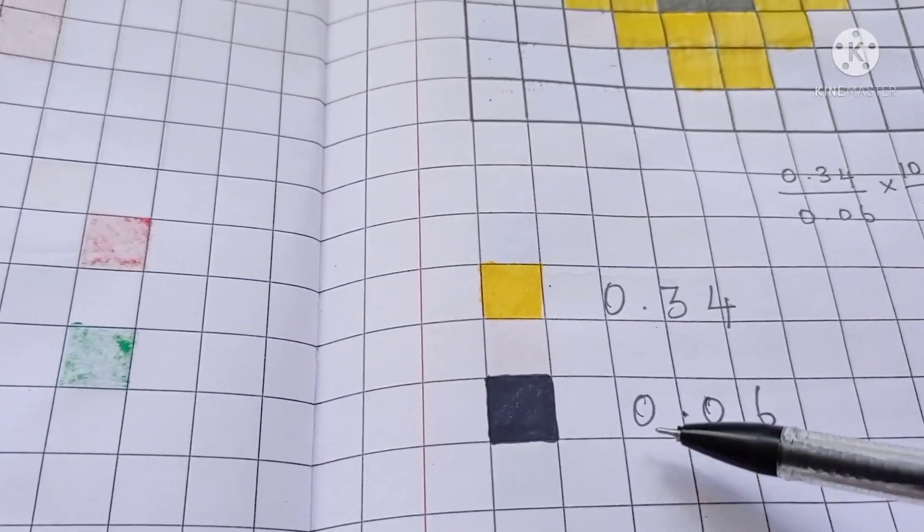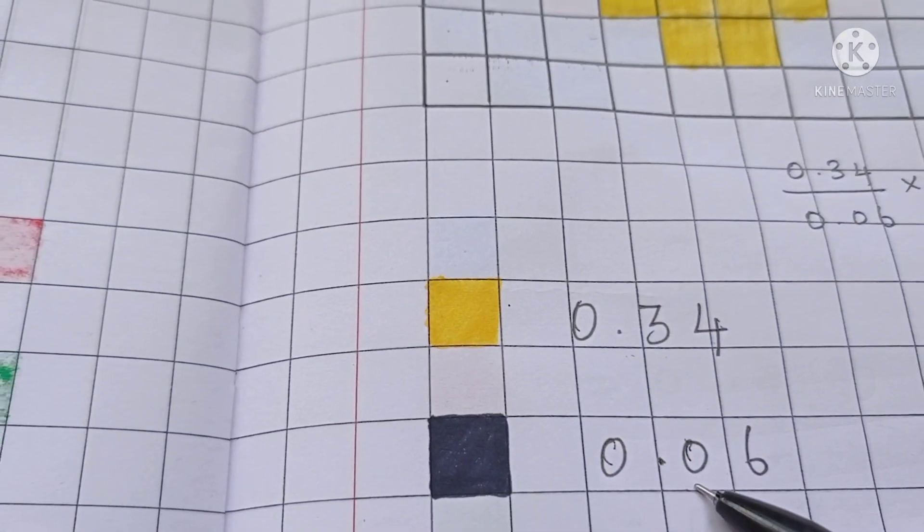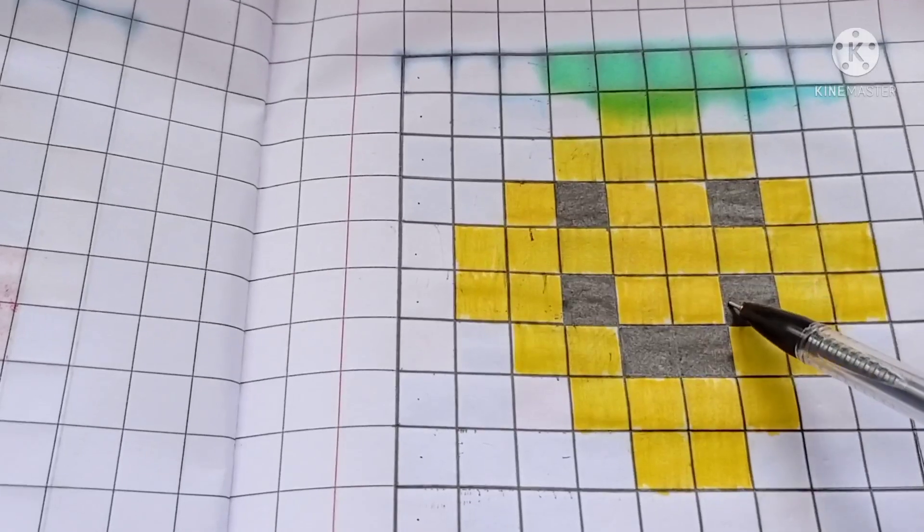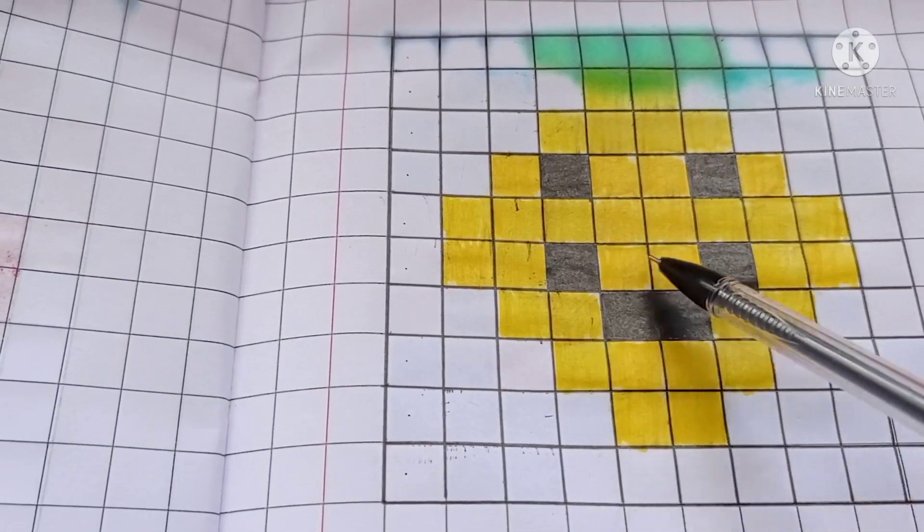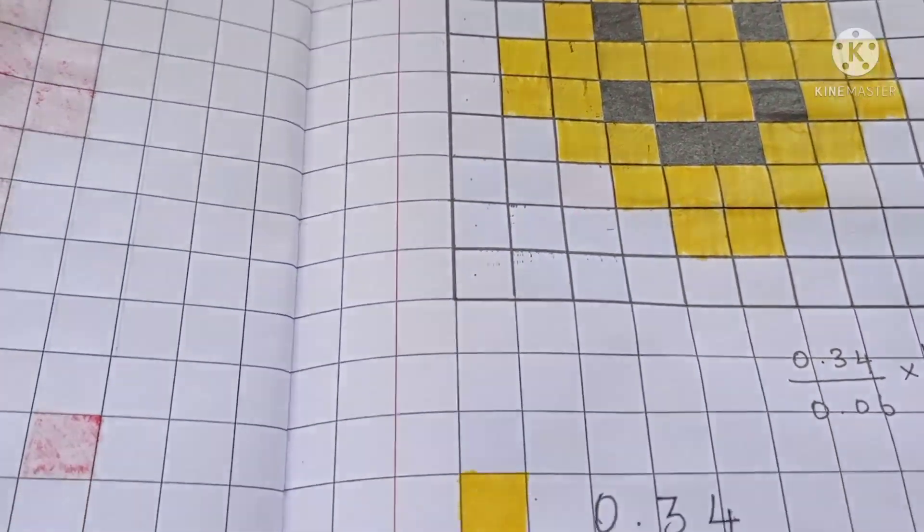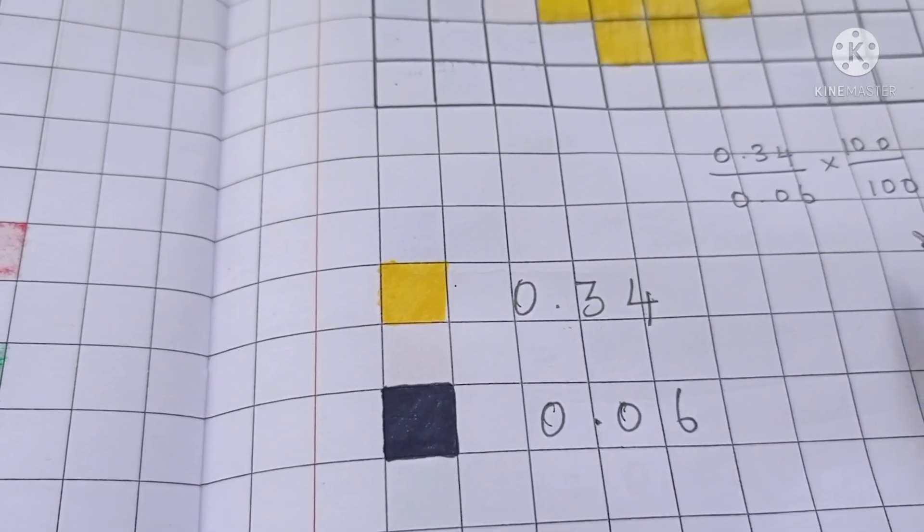Next black. 0.06. 1, 2, 3, 4, 5, 6. So now do division.